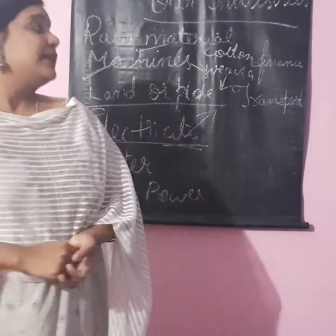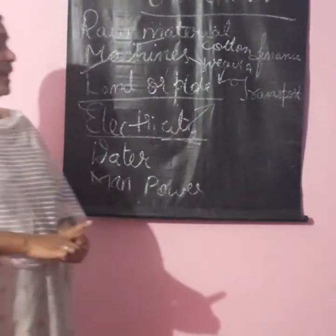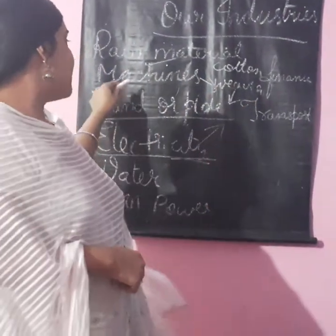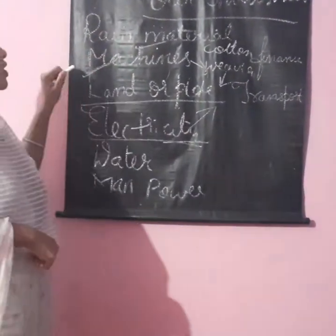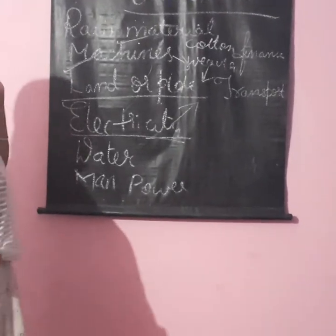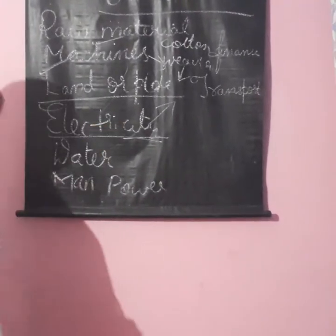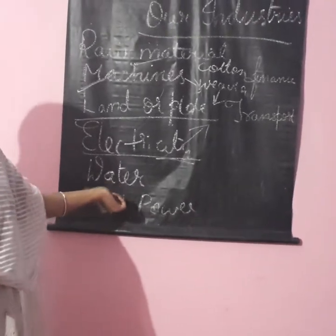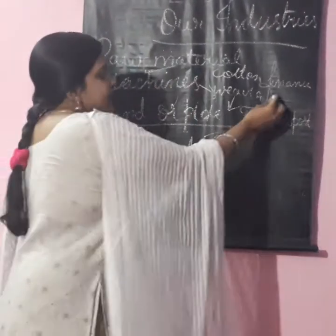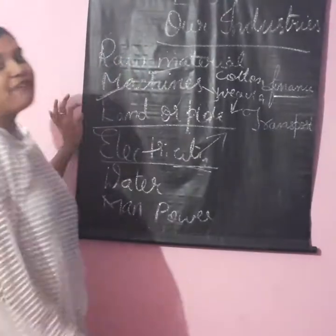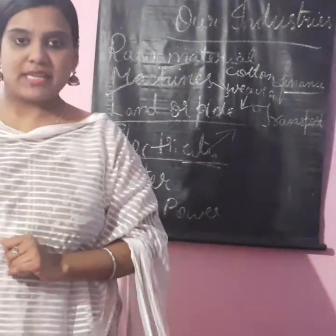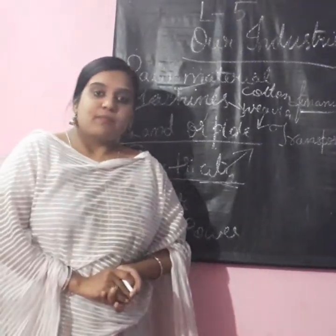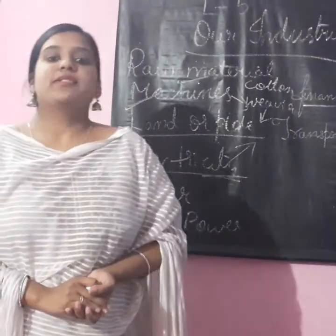Next, we need finance. Obviously, to start a machine, to get raw materials, to get the machine, to get the land and space, electricity, water, and manpower — to pay the laborers or employees their salary — the entrepreneur, as the owner, should have finance. Finance is nothing but money. He needs a large amount of capital. This is the basic requirement to start an enterprise.